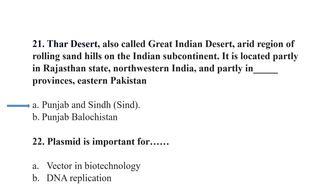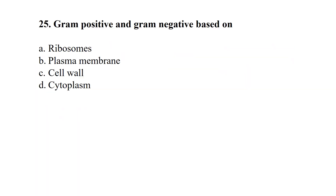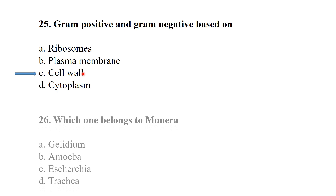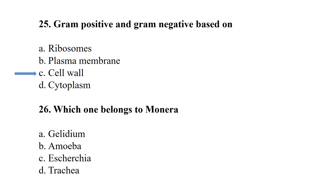Plasmids play an important role in biotechnology as vectors. The best answer is vector in biotechnology. Gram-positive and gram-negative bacteria classification is based on the cell wall — the best answer is cell wall.